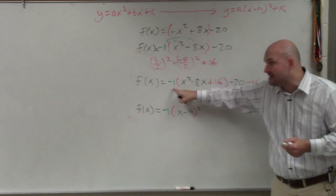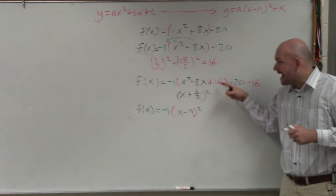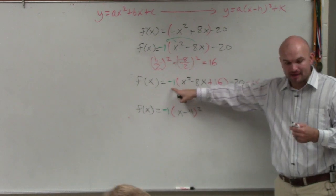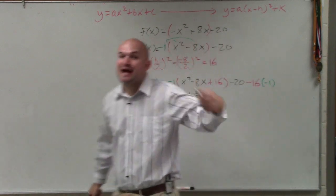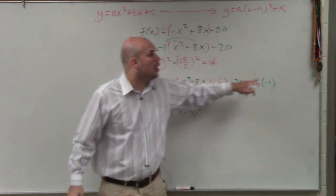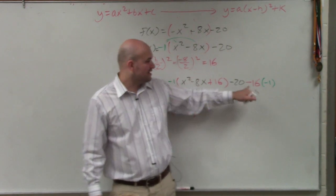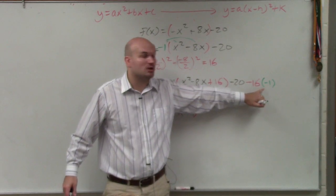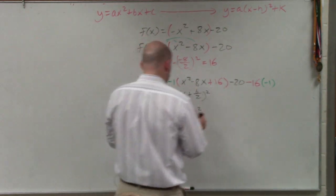So if I add a 16 inside the parentheses, that means that 16 is being multiplied by the negative 1. So in reality, I'm not adding 16. I'm adding 16 that's multiplied by negative 1. So all that means is, if I'm going to subtract a 16 on the outside, I also have to subtract it, multiply it by negative 1. So therefore, now when I go and simplify this, negative 16 times negative 1 is positive 16. Negative 20 plus 16 is negative 4.